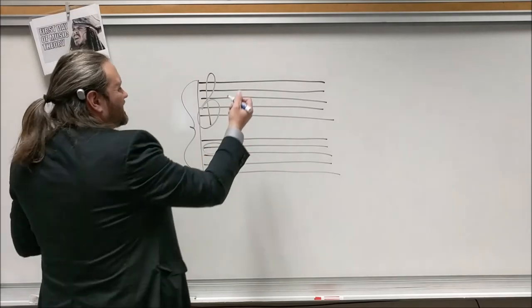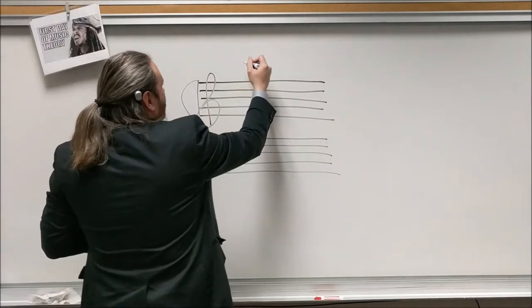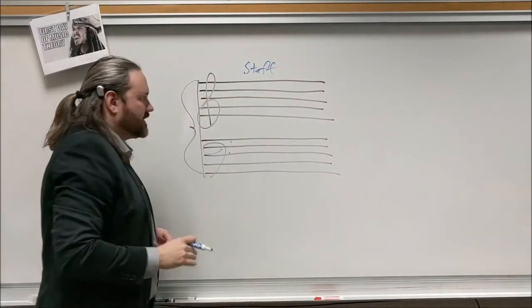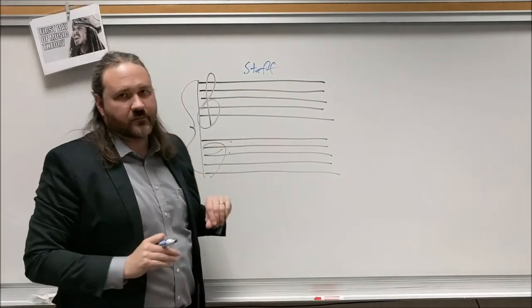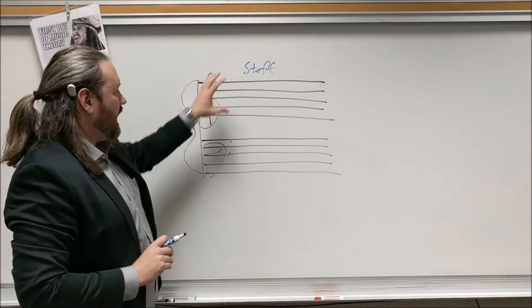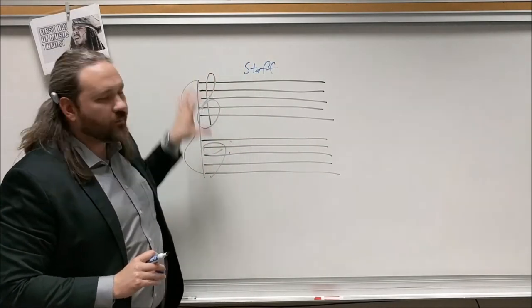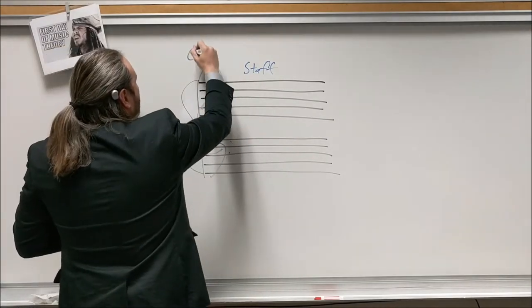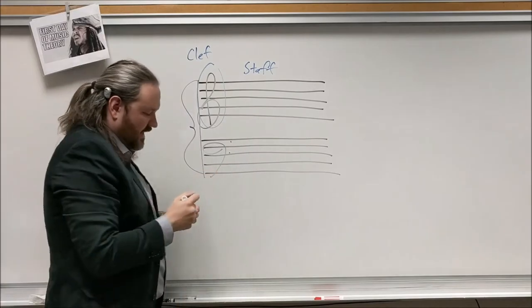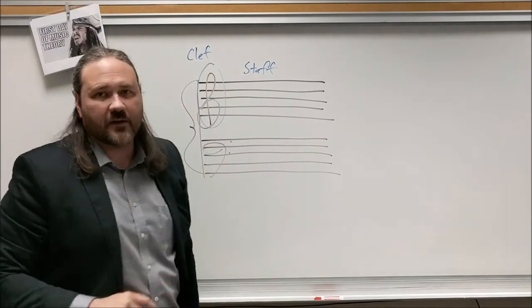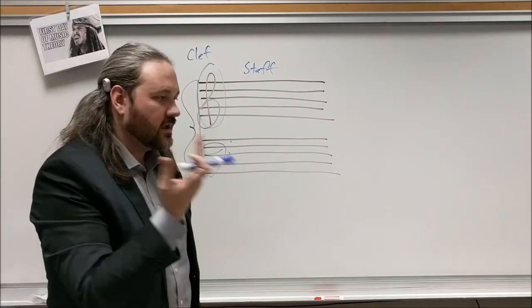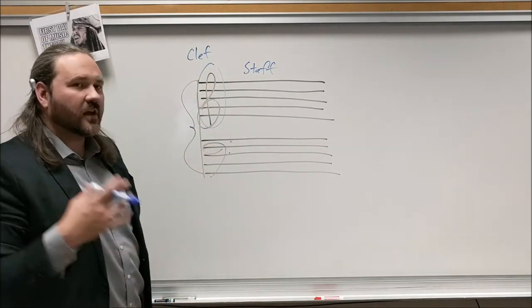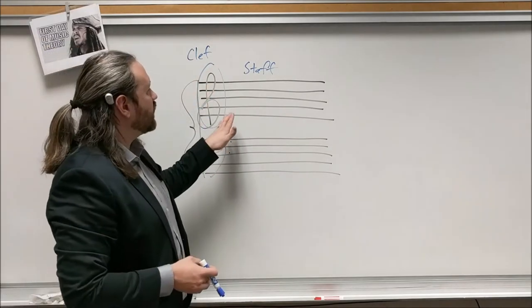First, terminology: when you have these five lines, that's called a staff. The staff is what we use to read music. What we put at the beginning of the staff is called a clef — as in C-L-E-F, not 'cleft' as in cleft chin or cleft palate.